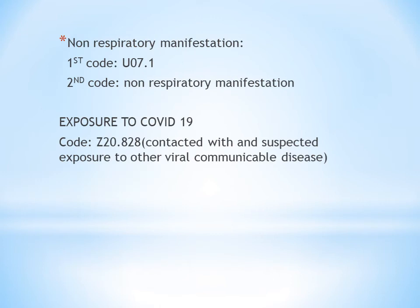Similarly, the same applies to non-respiratory manifestations. If a patient is having any non-respiratory manifestation due to COVID-19 — for example, enteritis — first code U07.1 for COVID-19, and secondly code the particular non-respiratory manifestation. For exposure to COVID-19, meaning the patient has had exposure or contact with a COVID-19 infected patient, you code Z20.828: contact with and suspected exposure to other viral communicable diseases.